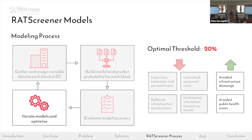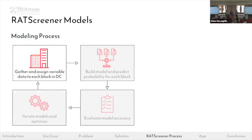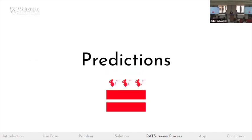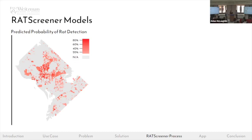With this in mind, we optimized the models and landed on a threshold of 20% — blocks with over 20% probability of rat detection would be considered likely to have rats. This keeps costs as low as possible and public benefits as high as possible. We repeated this process over several iterations and ultimately selected a Support Vector Machine (SVM) model, which predicts the probability of rat detection with an overall accuracy of 72%.